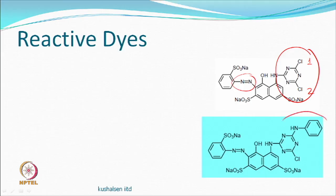One modification of the same group is to have only 1 chlorine, giving a monochlorotriazine group. This is sometimes known as a hot brand dye, and these are preferred for dyeing compared to the dichlorotriazine type.